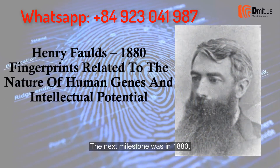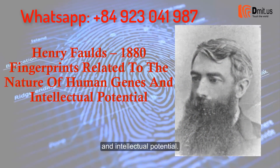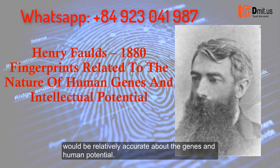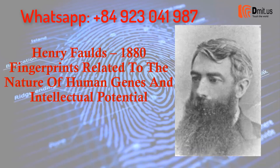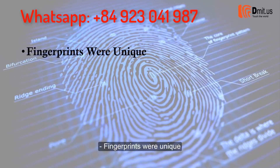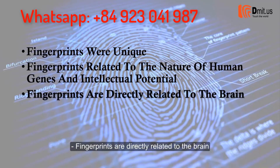The next milestone was in 1880, when Henry Faulds studied fingerprints in relation to the nature of human genes and intellectual potential. He gave a theory about TFLC — the total fingerprint line count — which would be relatively accurate about genes and human potential. Fingerprints were shown to be unique and directly related to the nature of human genes and intellectual potential.